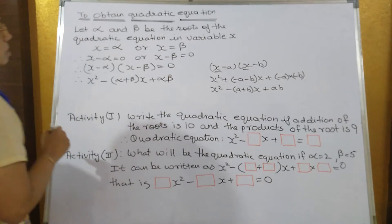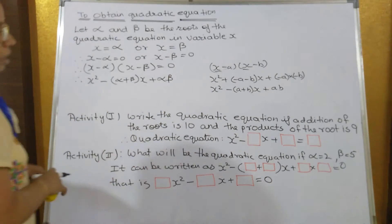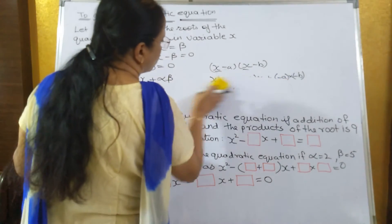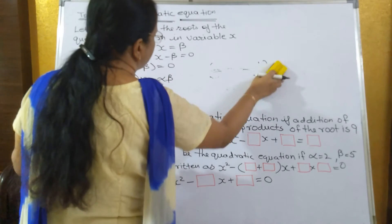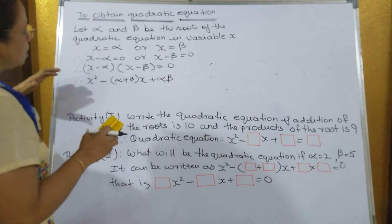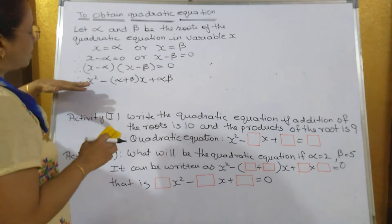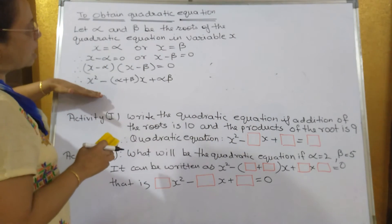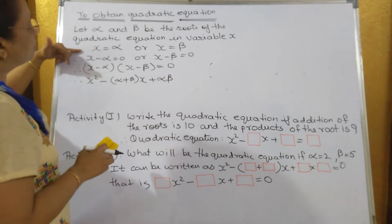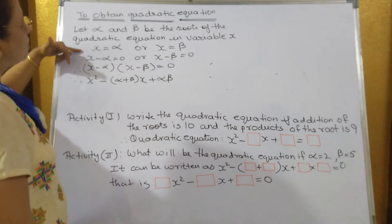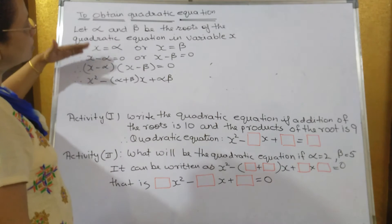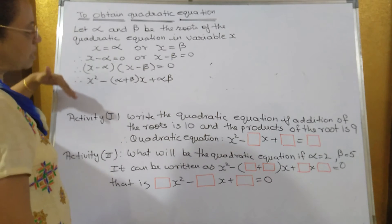This is how we form the equation if the roots are given. We are going backward — in factorization, we used to start from the equation, break it up, find the factors, and then put the values of x. Here we are doing the same thing but in reverse.